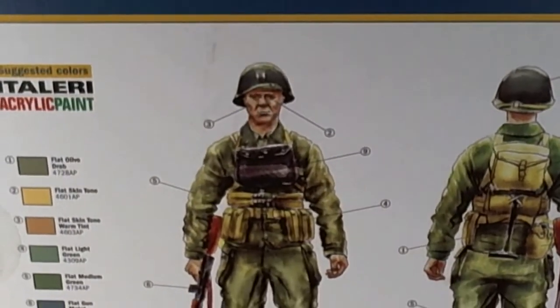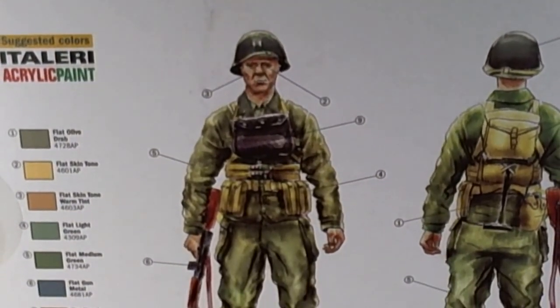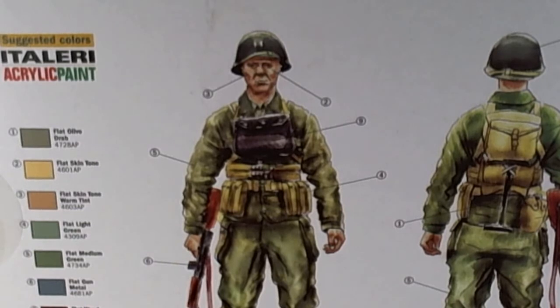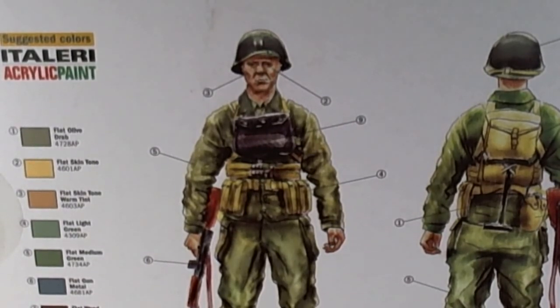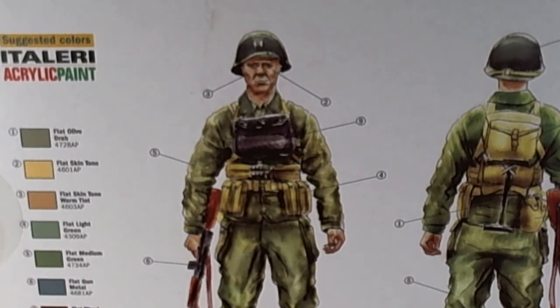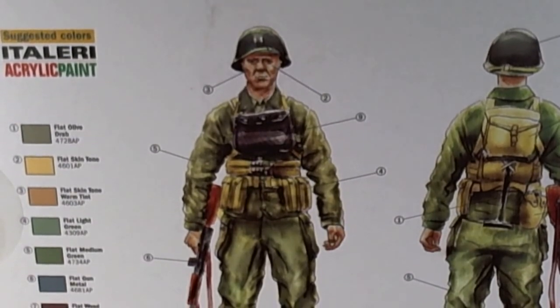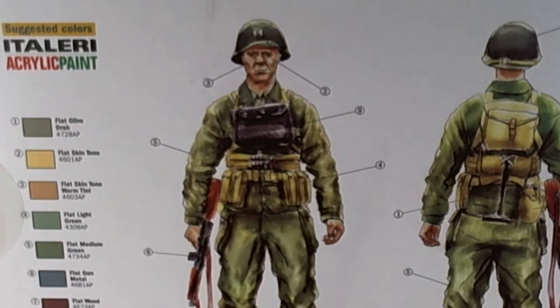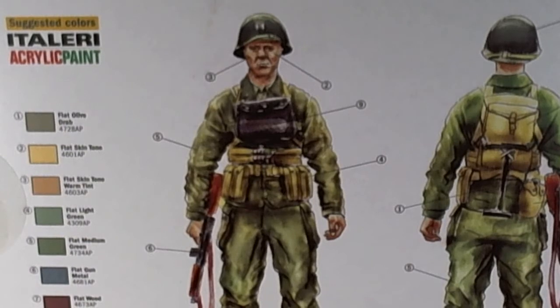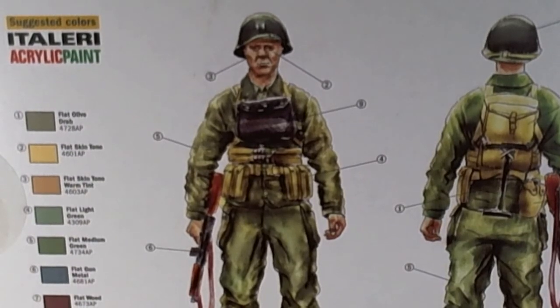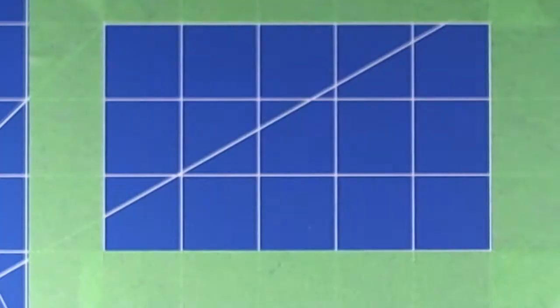The front and back, of course they got their color callouts. If anybody knows, I believe these are Vallejos, I need your confirmation on that. Number one is a flat olive drab, the paint number would be 4728 AP. Please confirm these are available paints I can get my hands on. There's four sprues in the box.